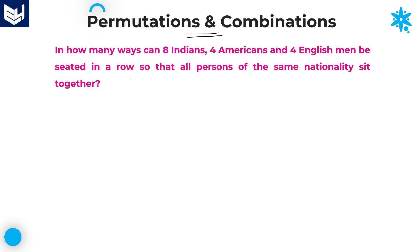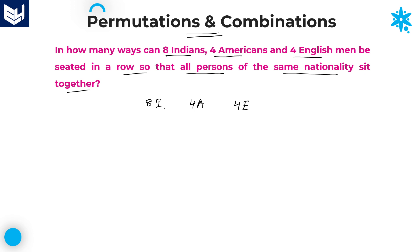See the first question in this session: In how many ways can 8 Indians, 4 Americans and 4 Englishmen be seated in a row so that all persons of the same nationality sit together? According to the given question, there are 8 Indians, 4 Americans and 4 Englishmen. The given condition is all the persons which belong to the same nationality sit together.